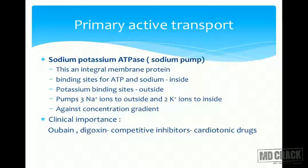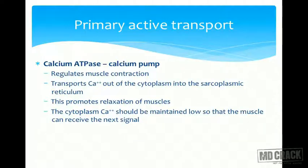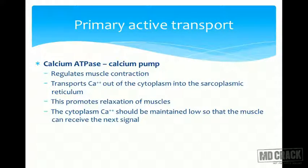The second example is the calcium ATPase, or calcium pump, which regulates muscle contraction. It transports calcium out of the cytoplasm into the sarcoplasmic reticulum, helping in relaxation of the muscle so it can receive the next signal. This movement is against the concentration gradient, as the sarcoplasmic reticulum already contains a lot of calcium.